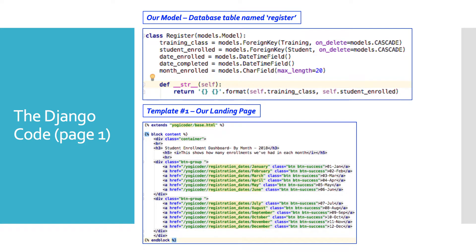Now we dive into the code, looking at the model and Template Number One. The model has a class called Register, which represents a database table of the same name in lowercase. The fields important to us are date_enrolled — a DateTimeField — and month_enrolled — a CharField. Those are the two we'll tie into when we talk about our view and the template.